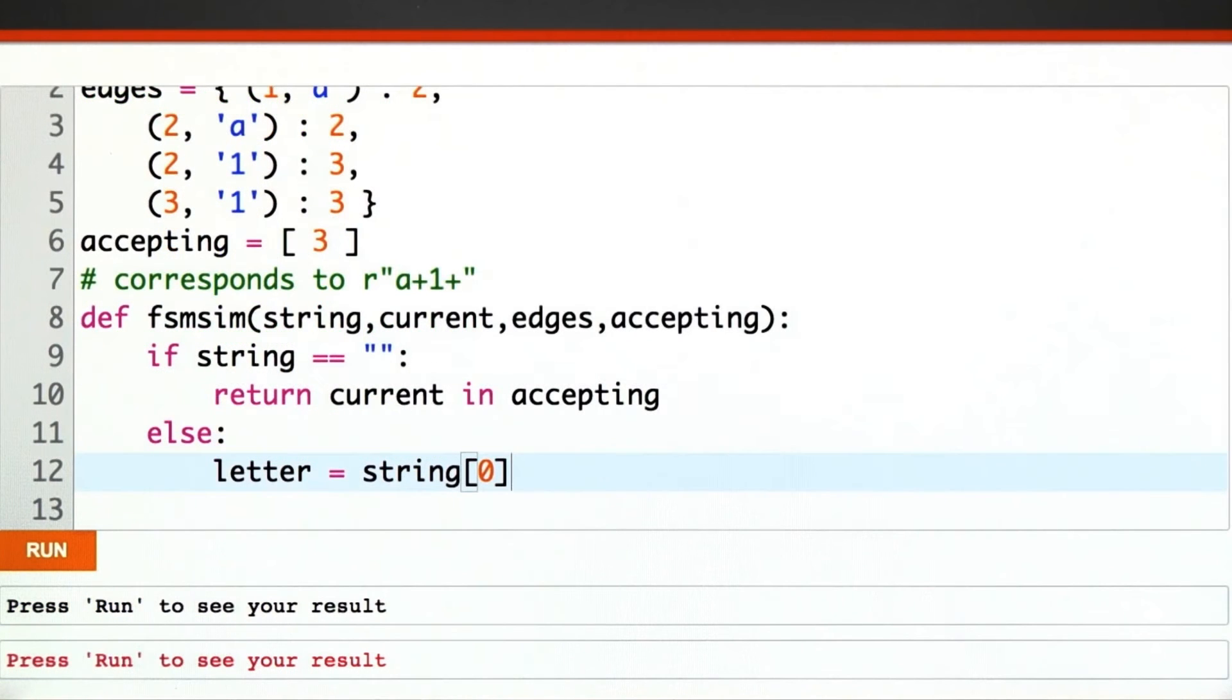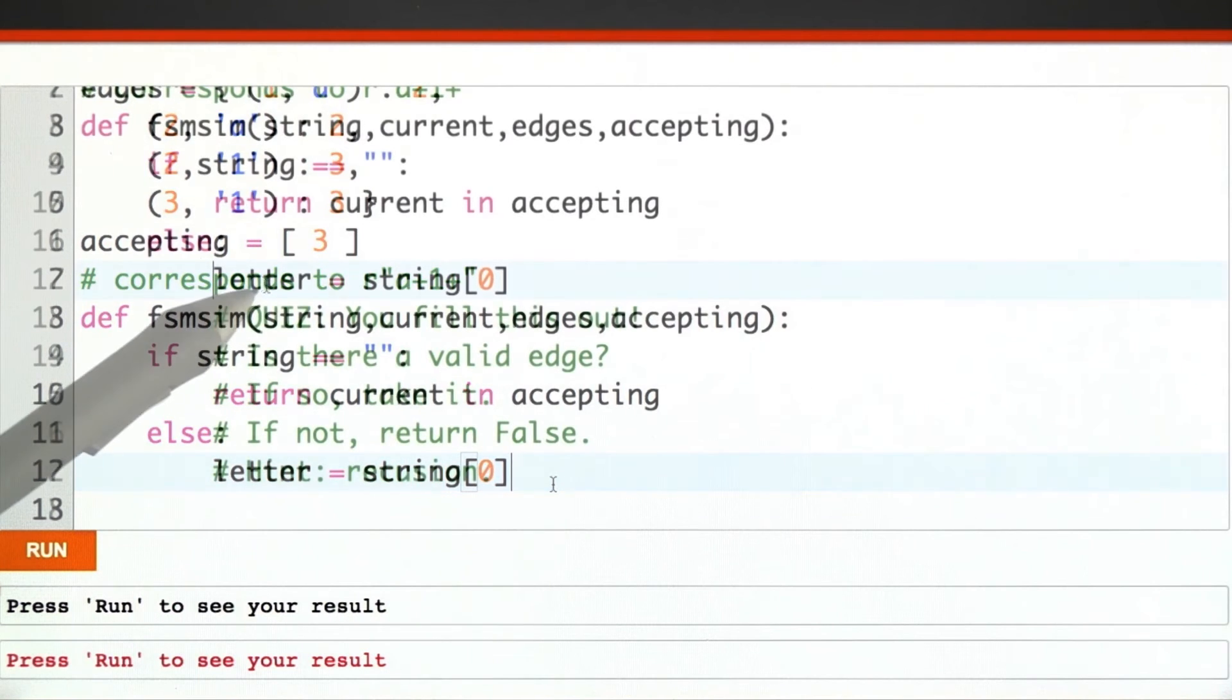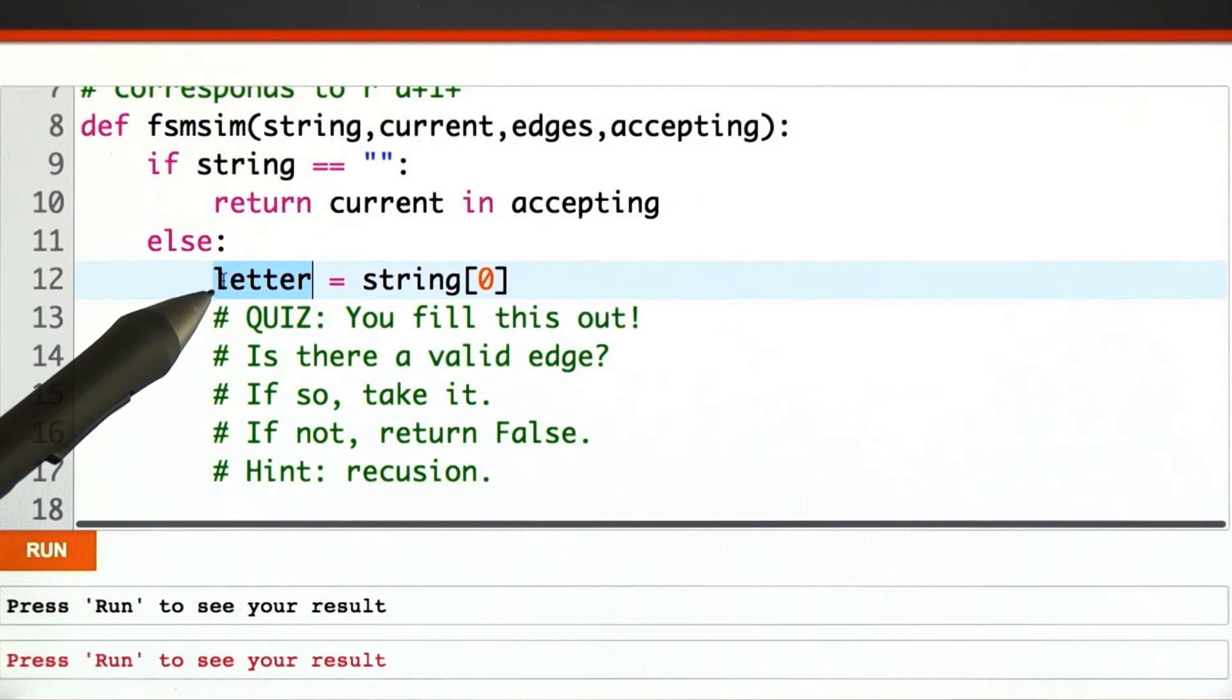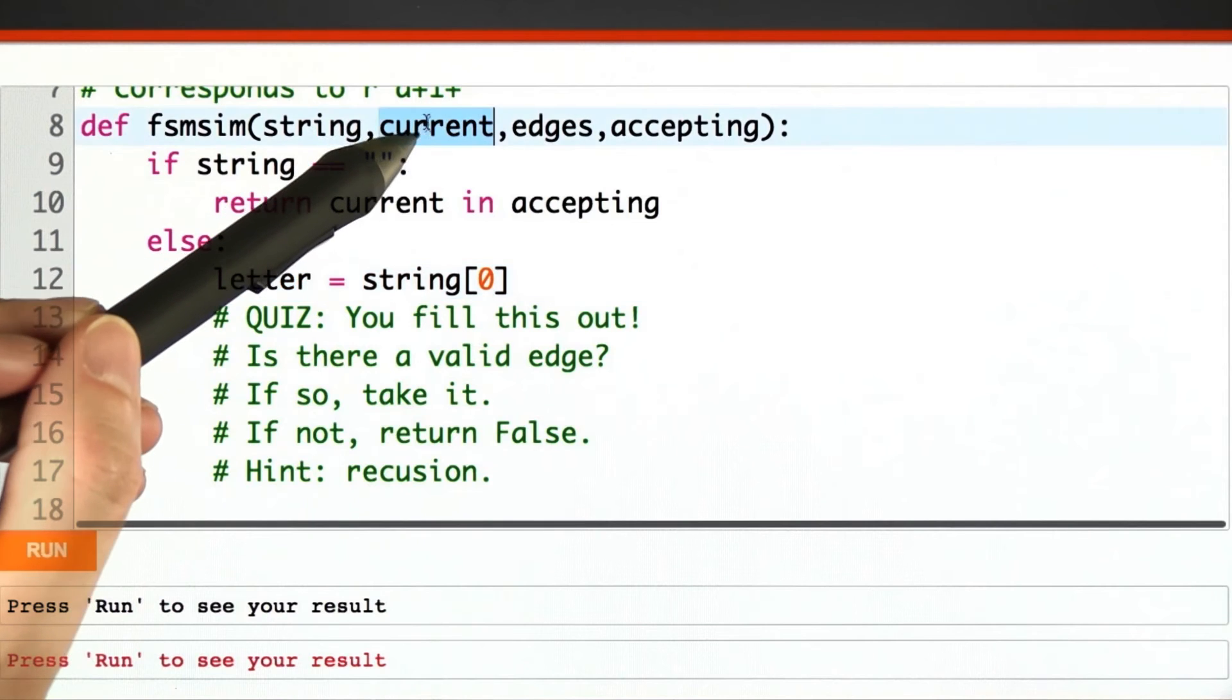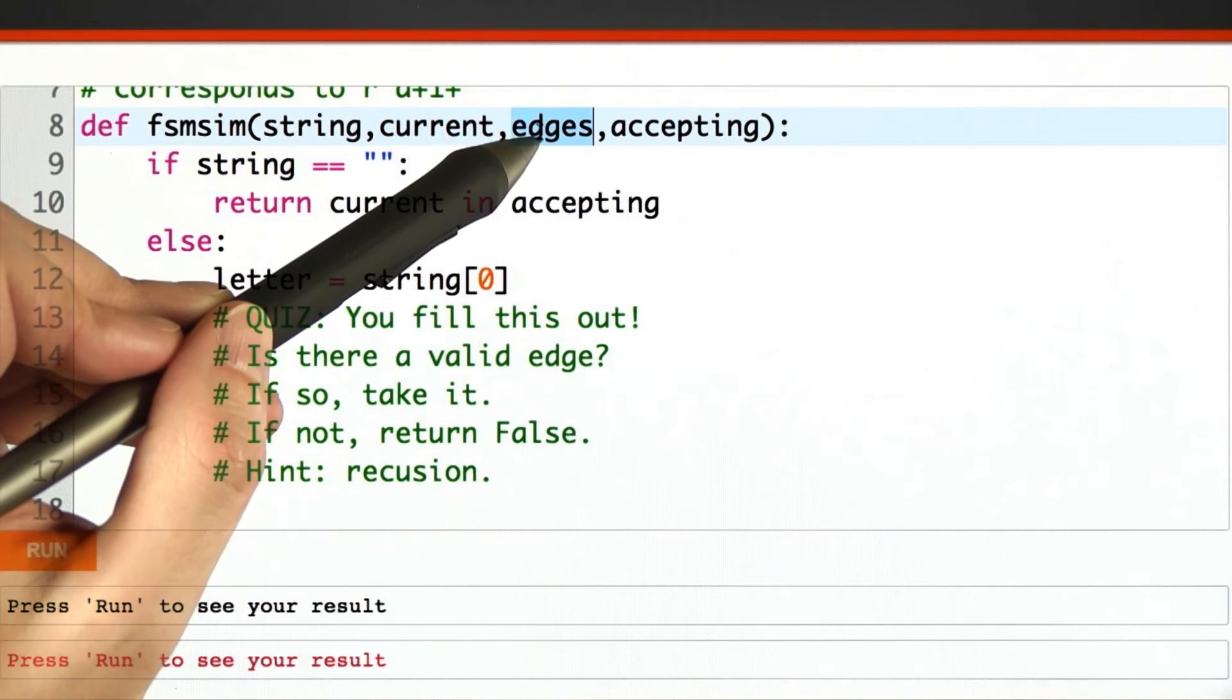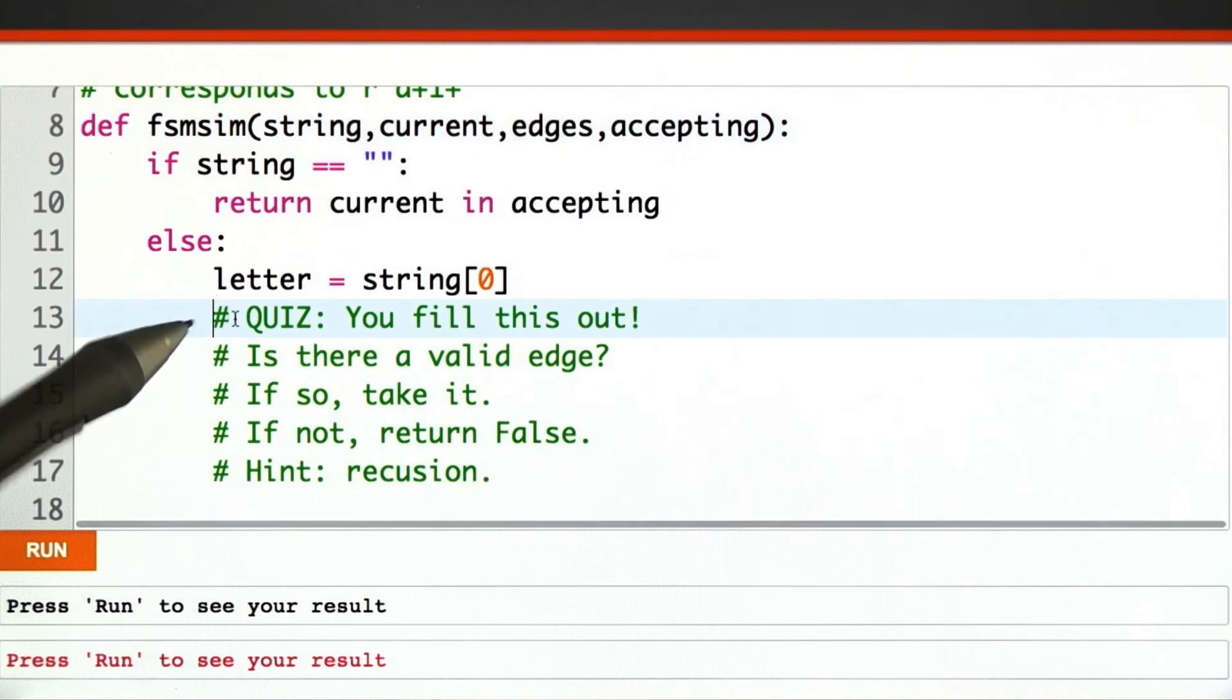If the string isn't empty, then I can get the current letter as the 0th position from the string. And now, here's your part. We know the current input letter we're looking at, the current state we're in, all of the edges are available to us. You fill out the rest of this code.